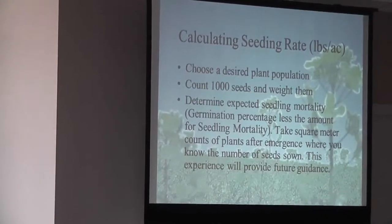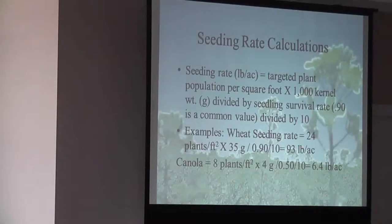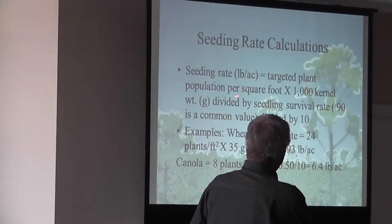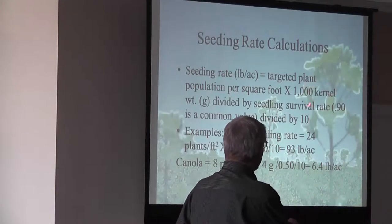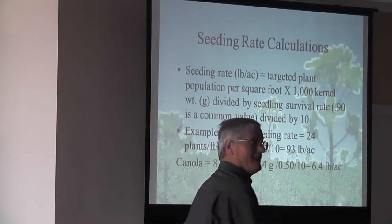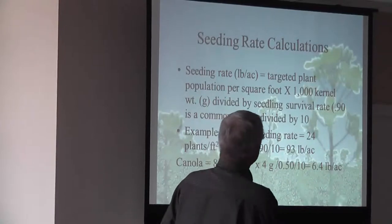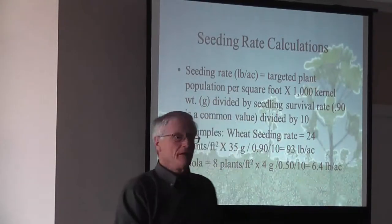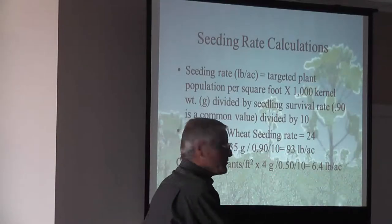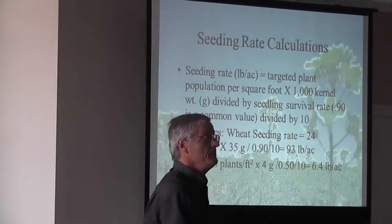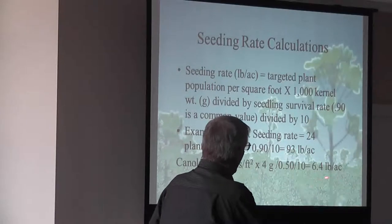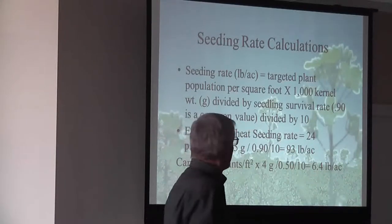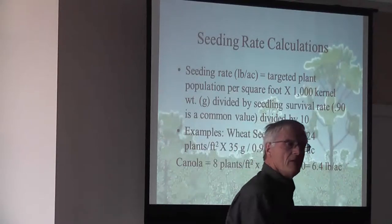So how do you choose what's the right population? I'm going to go through this. I use a seeding rate formula. Targeted plant population per square foot, 1,000 kernel weight. Divided by our seedling survival rate. Which is always hard to estimate. Divided by 10. Well here we want 8 plants per square foot. 4 grams per thousand. Which is a very good seed size. And that means 6.4 pounds of seed per acre on average. Not using a 50% survival level.